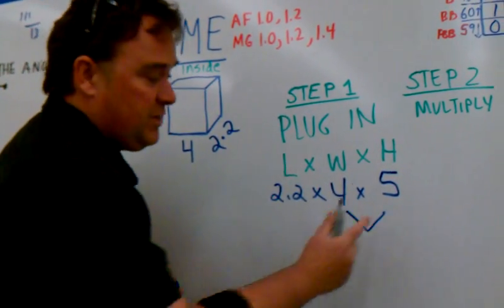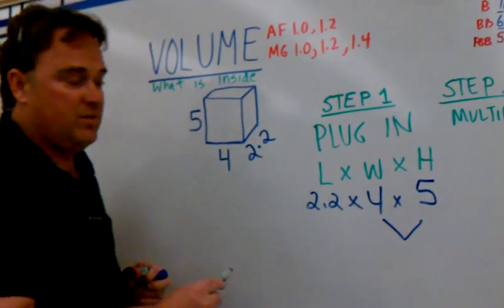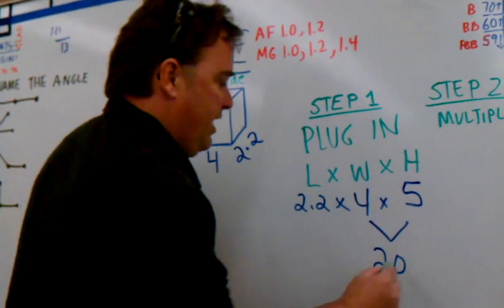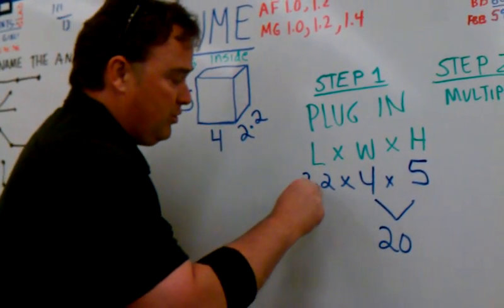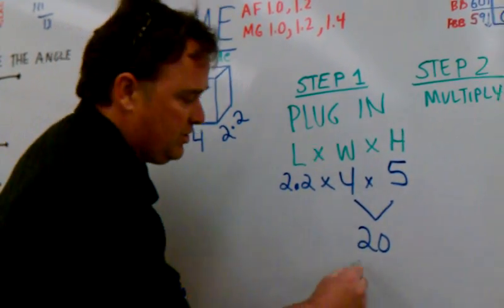20. Now, we have to multiply 2.2 times 20. So, let's do that down here. 2.2. Alright. Everybody, follow after me.